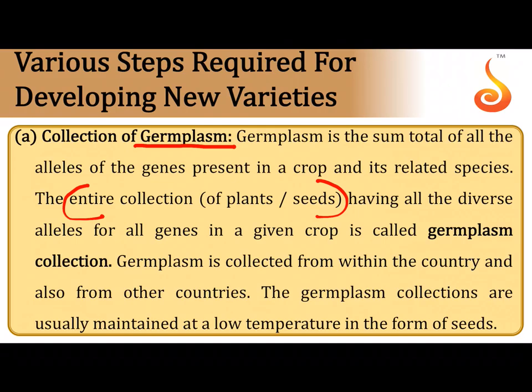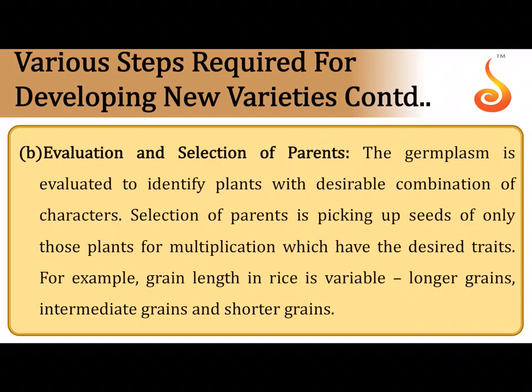From the wild, you identify plants with desirable characters — tolerance to high temperature, excessive rainfall, depleted minerals, less water, or high salinity. You collect those seeds as germplasm. Then you evaluate and select parents: identify which plant has which desirable character and designate plants as male and female parents. For example, grain length in rice varies — longer, intermediate, or shorter — and you select wild varieties with the desired trait for hybridization.